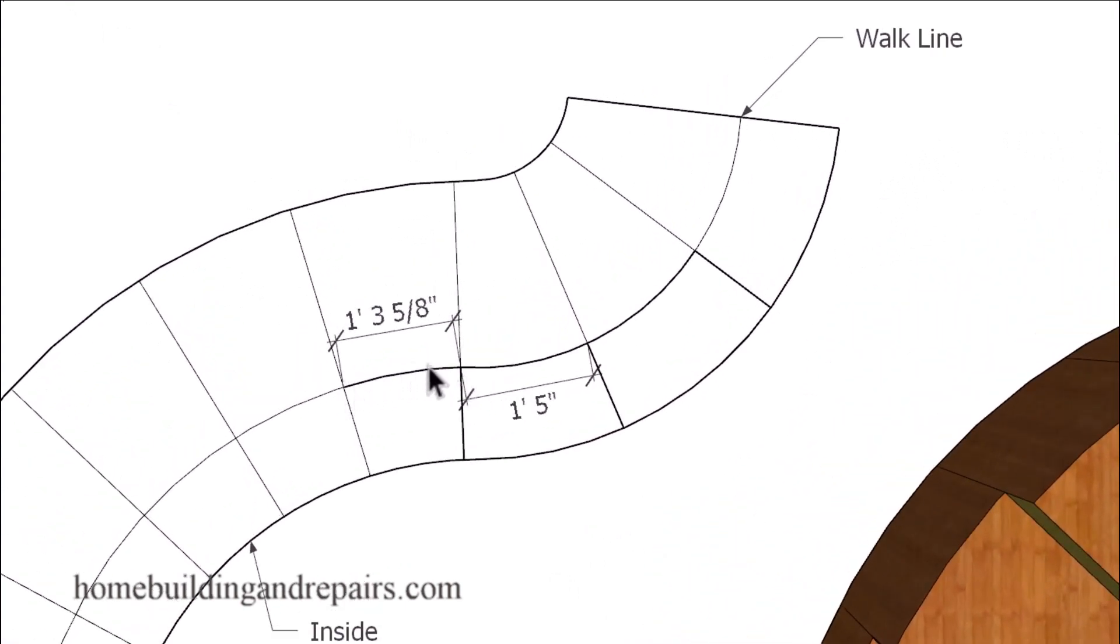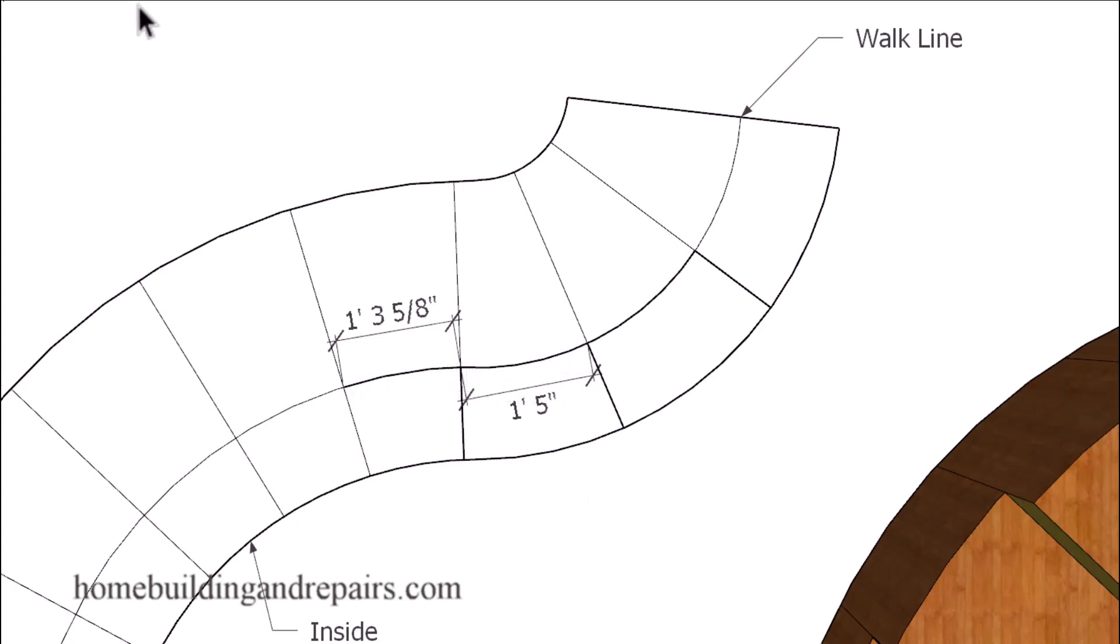Where you're not allowed to have more than three-eighths of an inch variation in the walk line. And hopefully this makes sense.